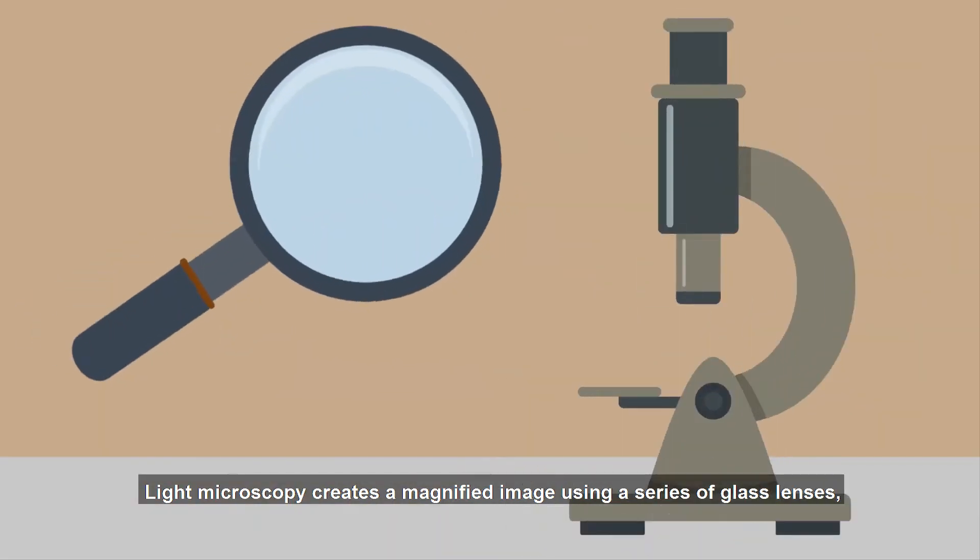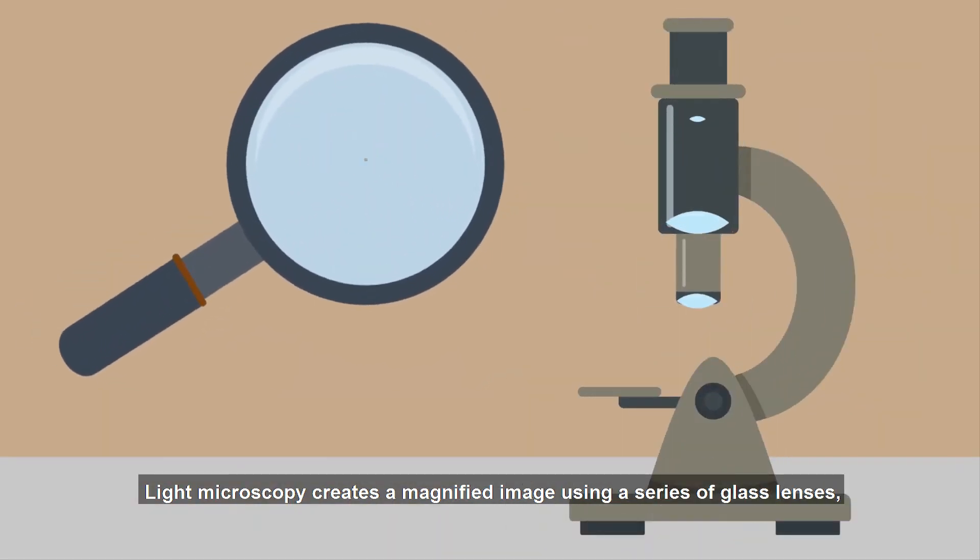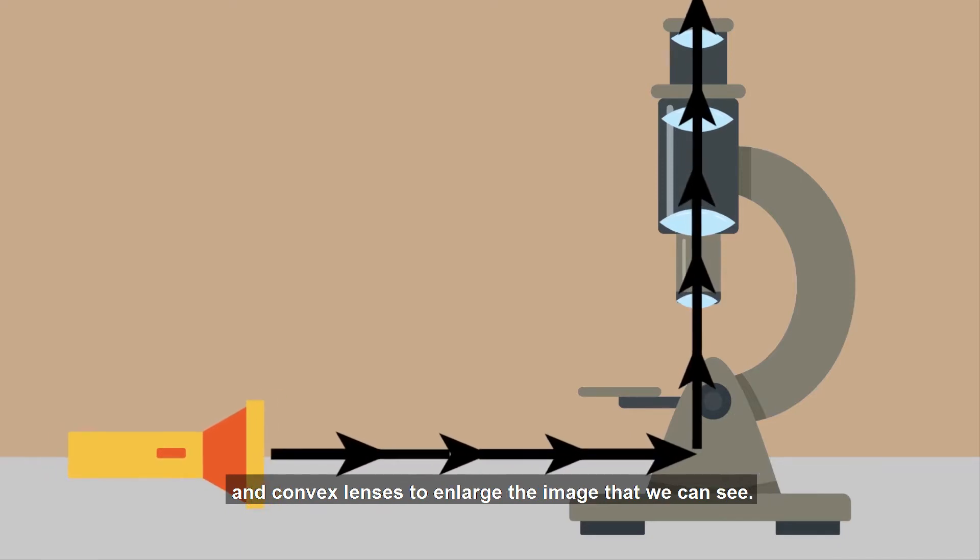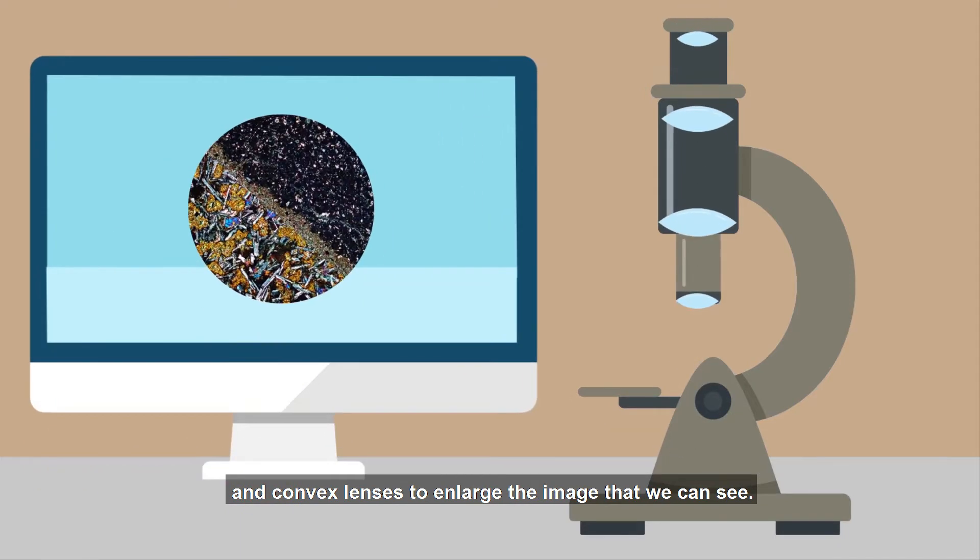Light microscopy creates a magnified image using a series of glass lenses, which first focus a beam of light onto or through an object, and convex lenses to enlarge the image that we can see.